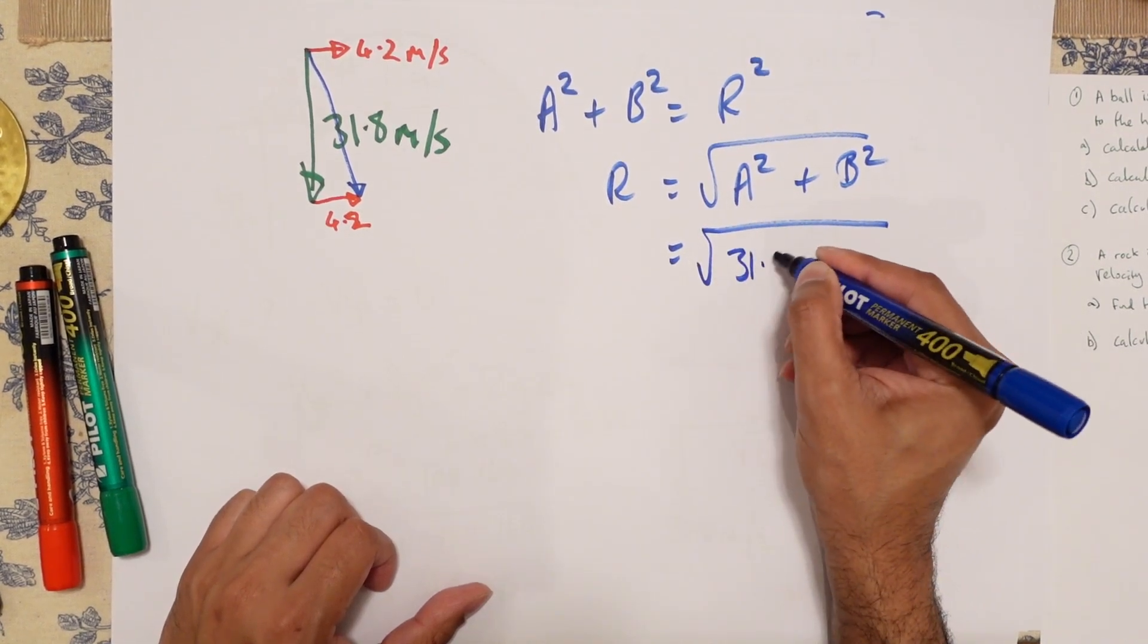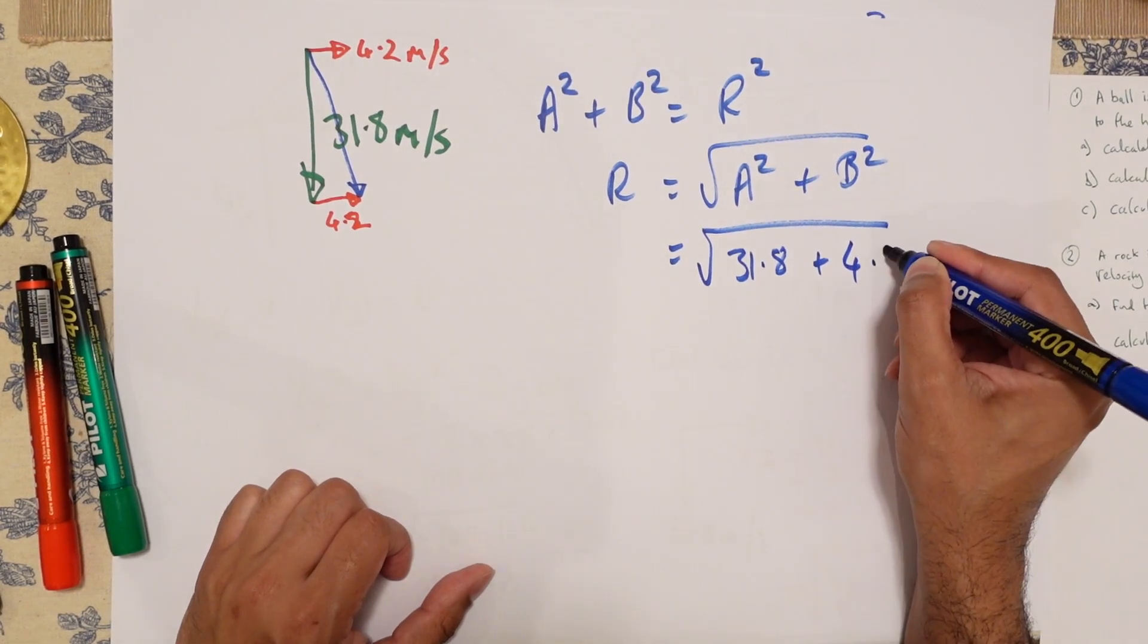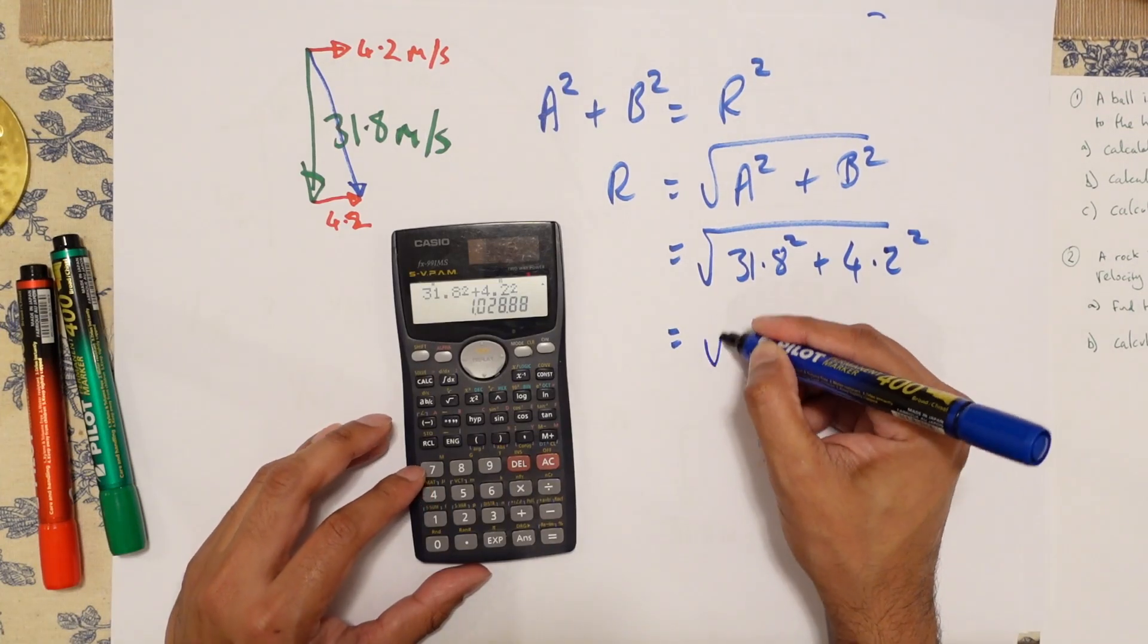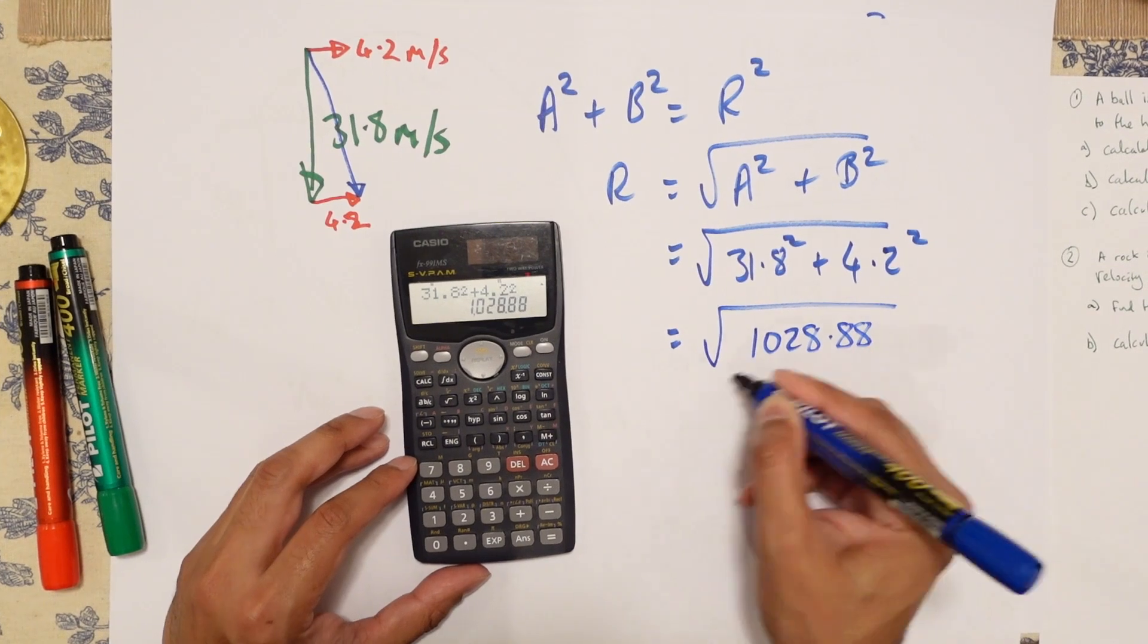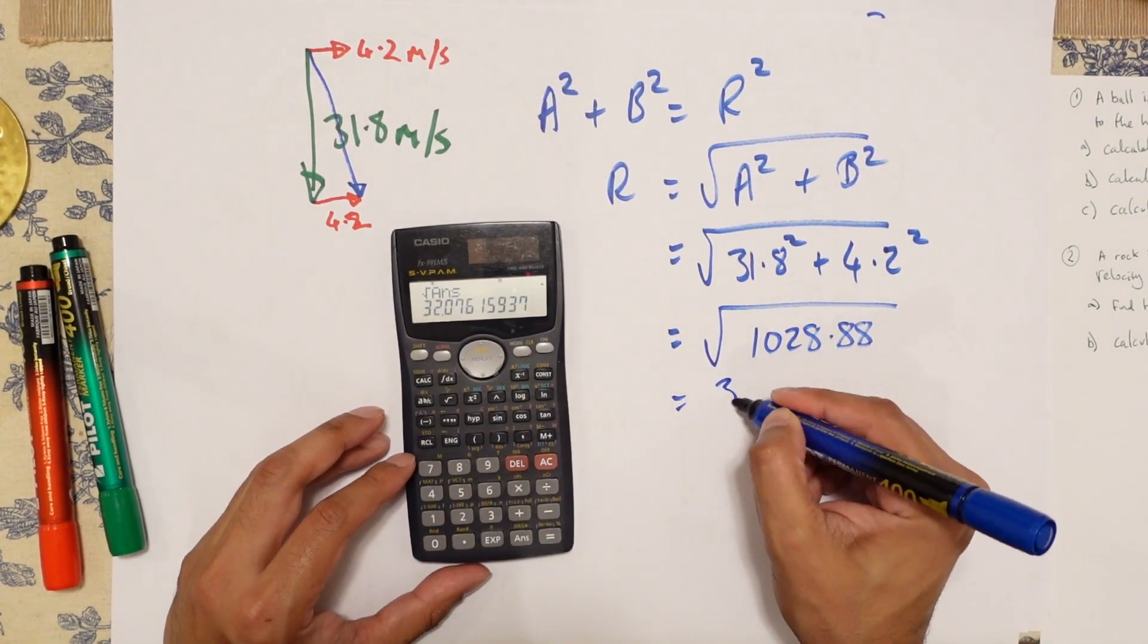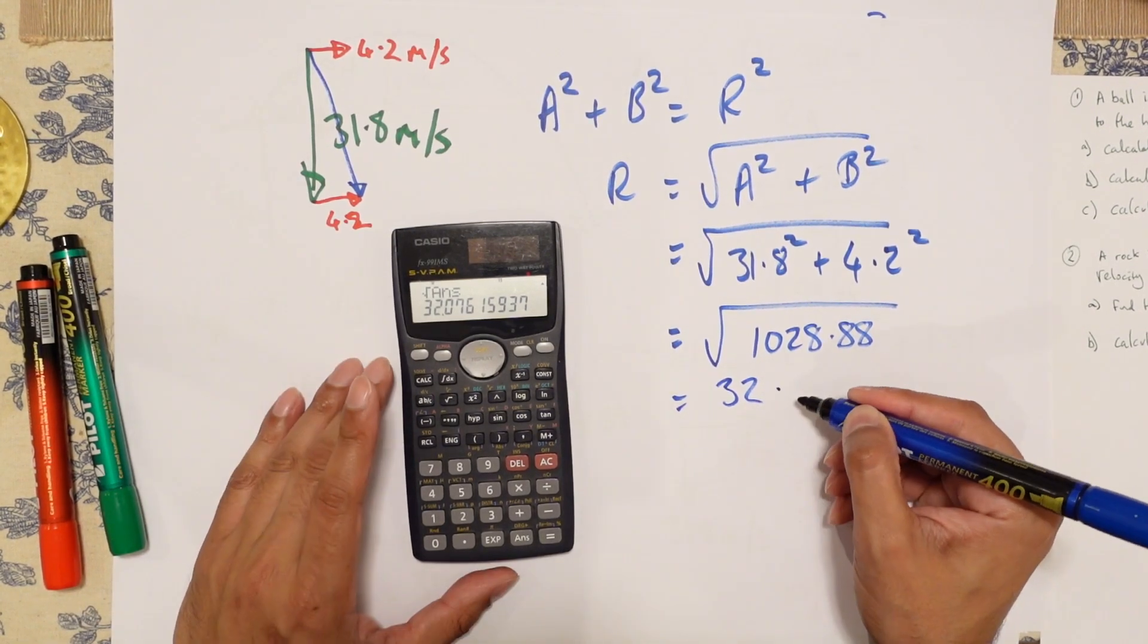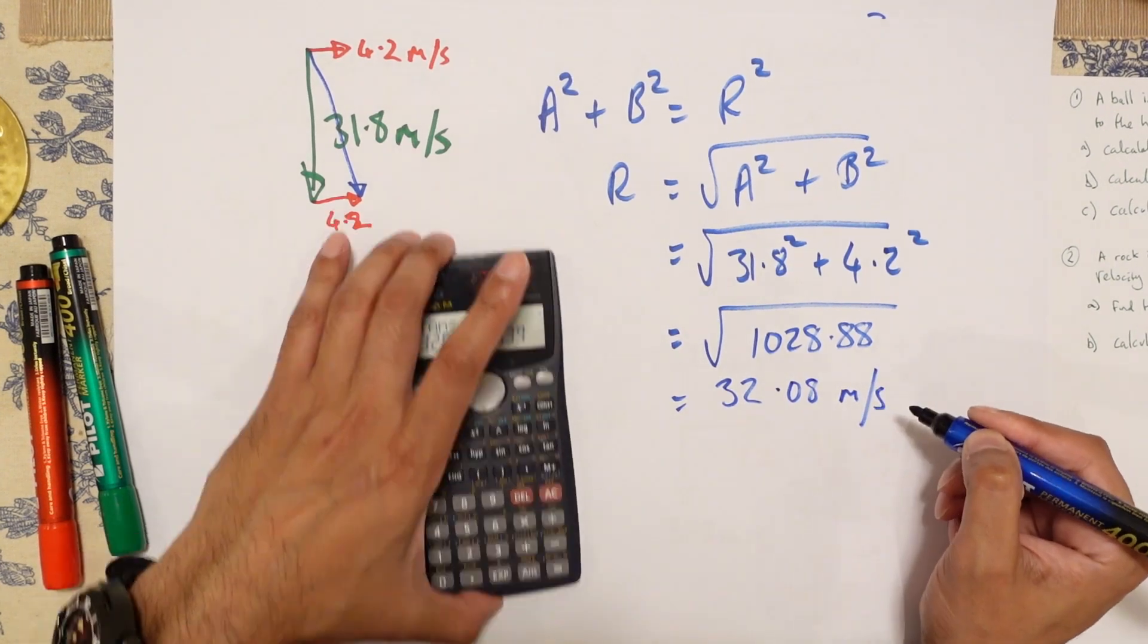So I'm going to put 31.8. And therefore, that means that was 4.2 over here. Remember, you have to square these. Is equal to 1028.88. Square root of the answer, and it's 32.08 meters per second.